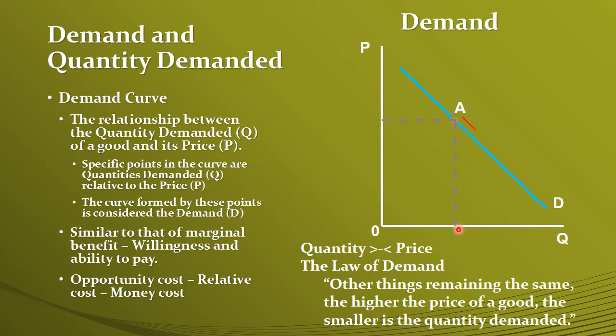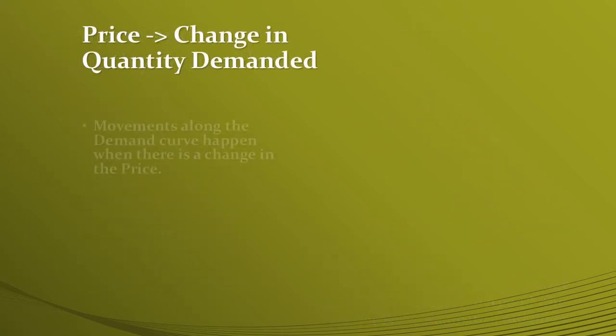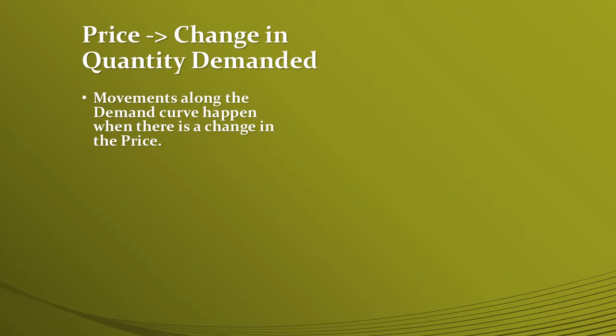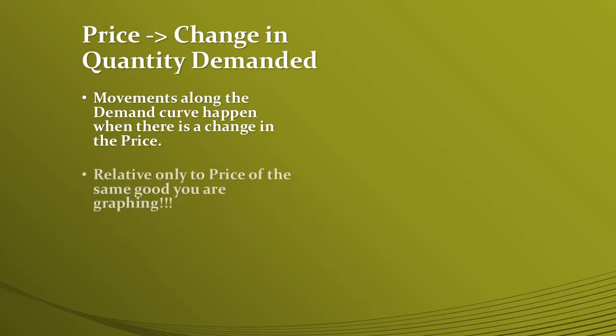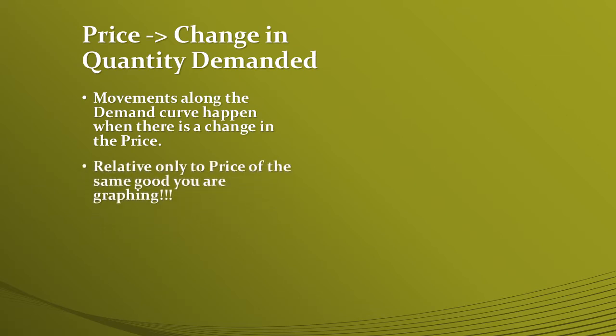As the price changes, what changes is not demand — the demand curve is not moving — but the quantity demanded. So the price generates a change in the quantity demanded, not a change in demand. This is called the movement along the demand curve, because our point moves along the curve.